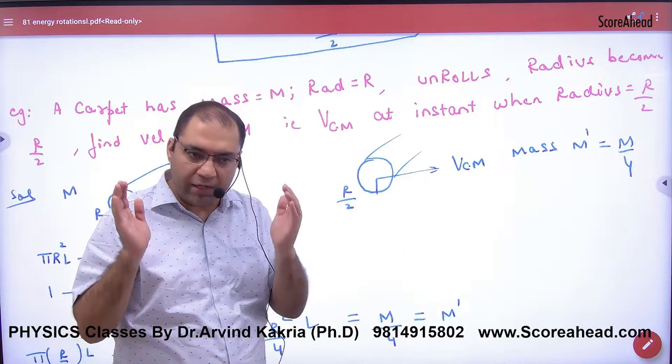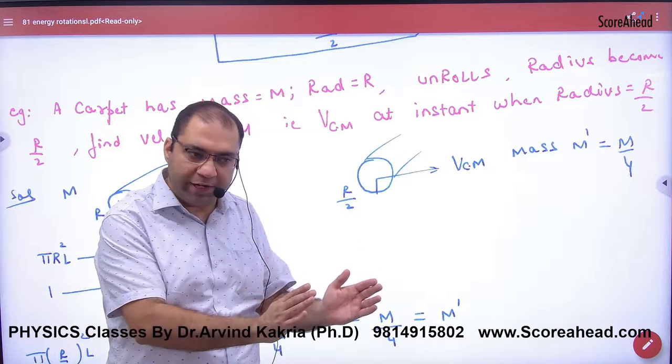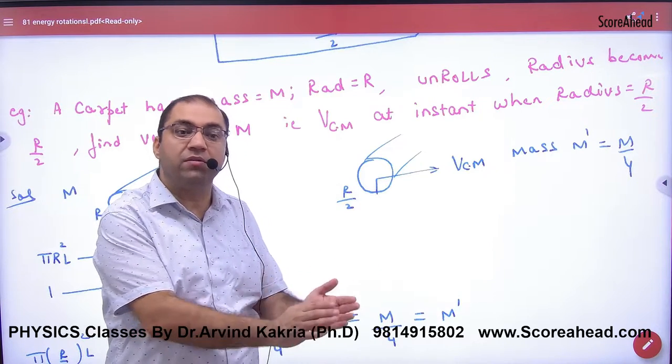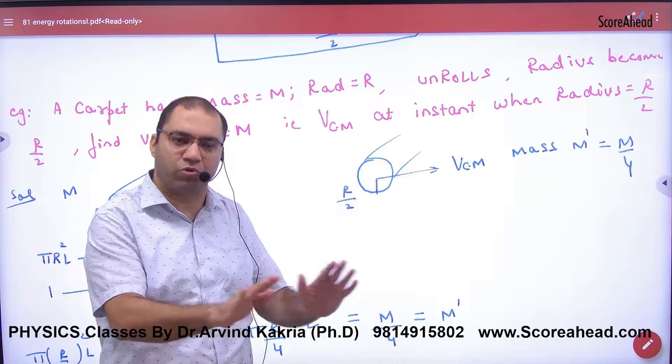So the radius is R, it is opening, opening, opening to R by 2. At the instant when it's R by 2, what is the velocity of the center of mass?